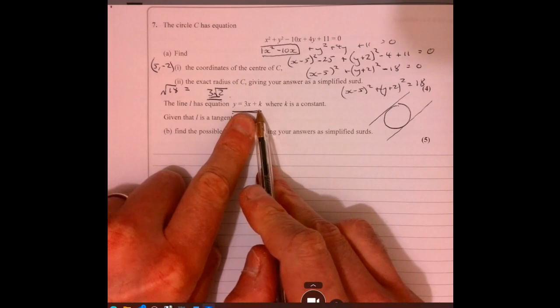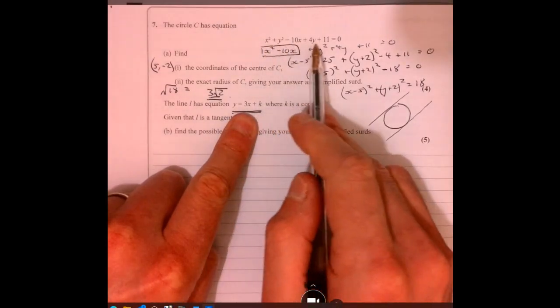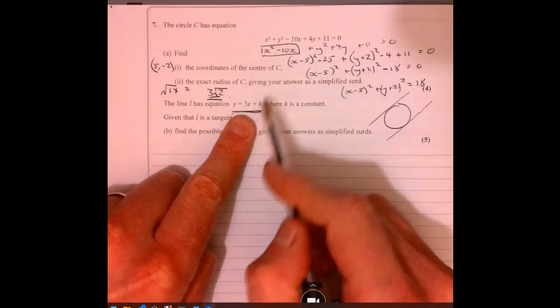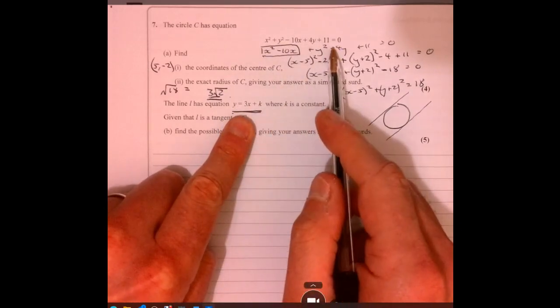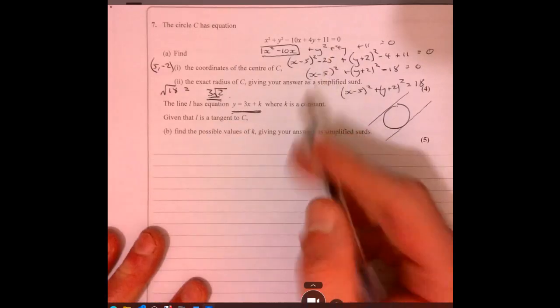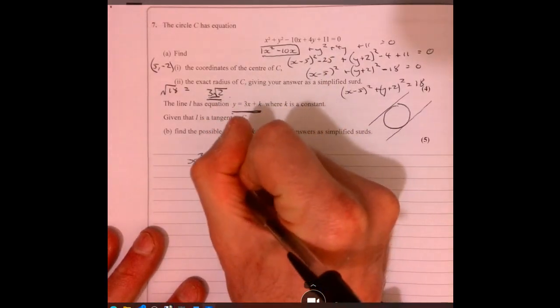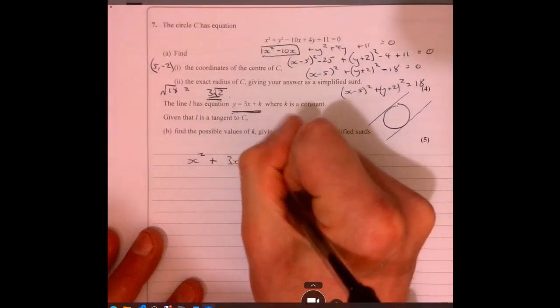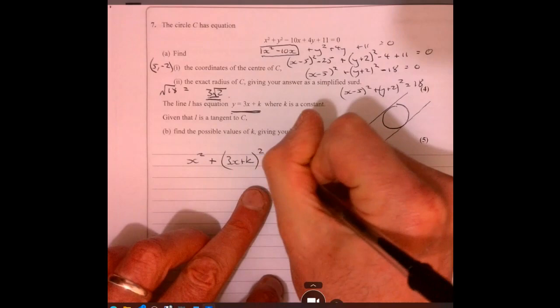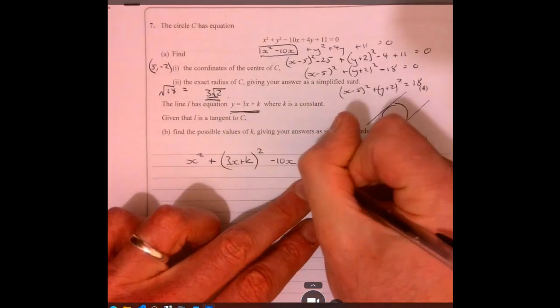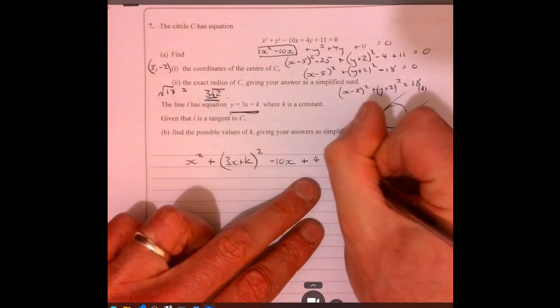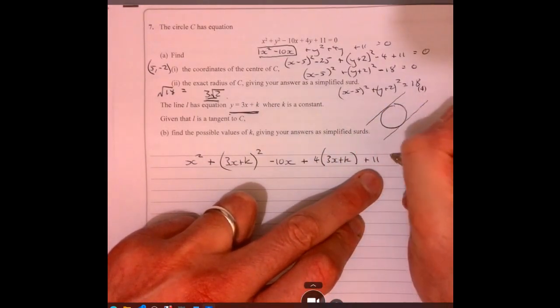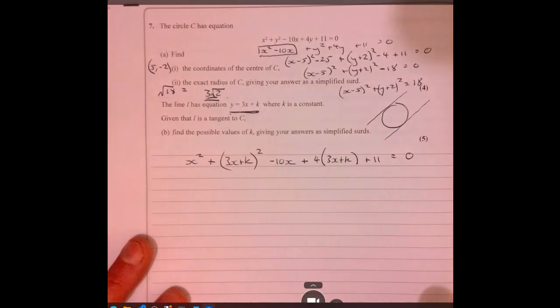Well, we're told that y is equal to this. So just rewrite this, but instead of having a y, write 3x plus K, and let's just see where that takes us. So that's going to give us what we've got. We've got x squared, we've got plus, just pop it in and see what happens. And then plus 4 times 3x plus K, and then plus 11, and then that equals 0.